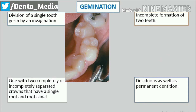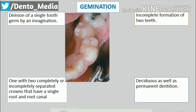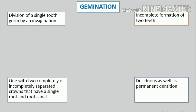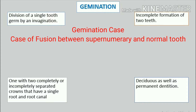It is seen in deciduous as well as permanent dentition, and in some reported cases appears to exhibit a hereditary tendency. It is not always possible to differentiate between gemination and a case in which there has been fusion between a normal tooth and a supernumerary tooth. Tooth count is normal when the anomalous tooth is counted as one.